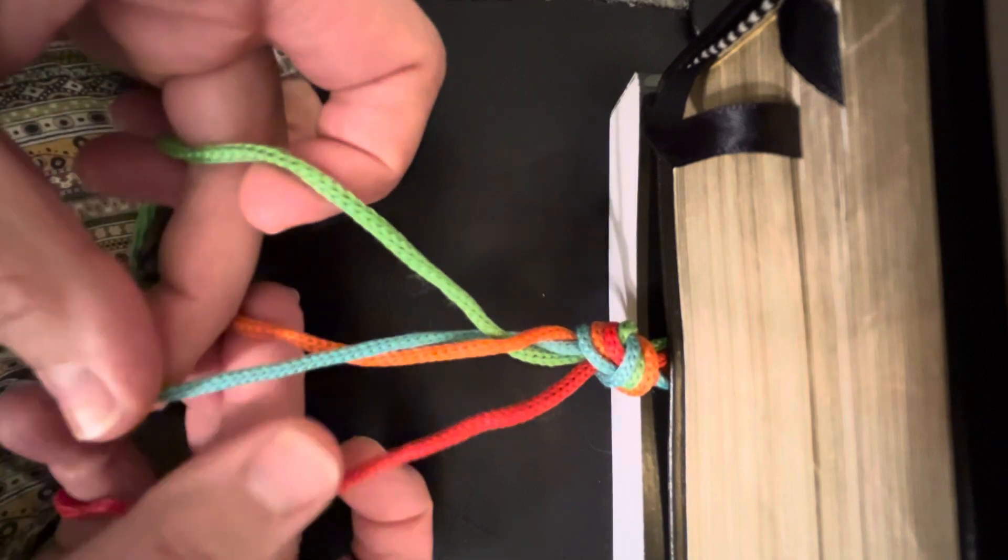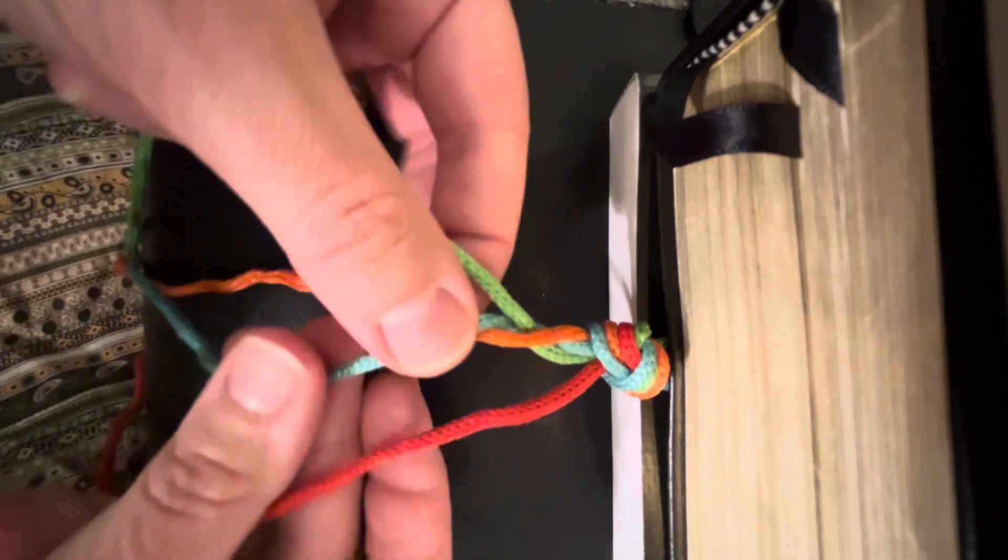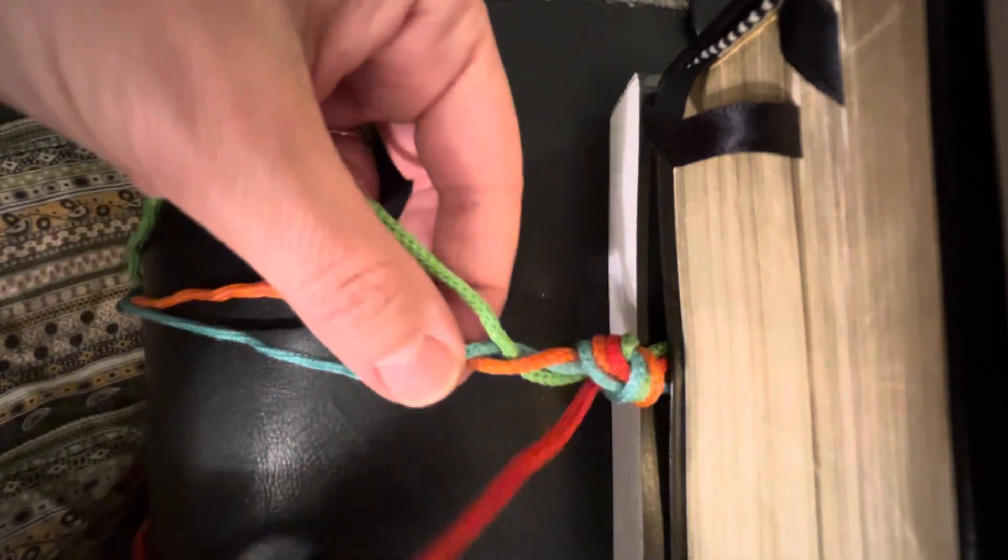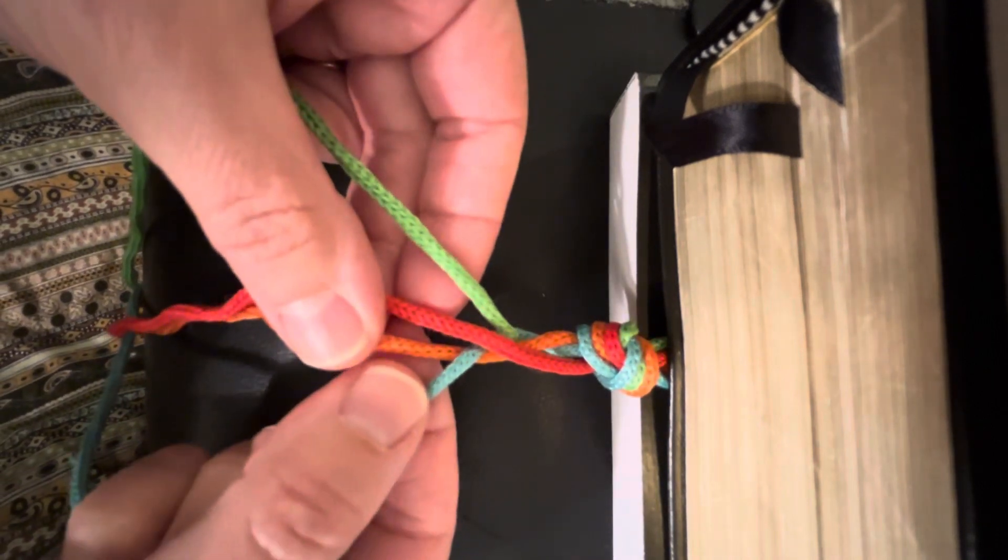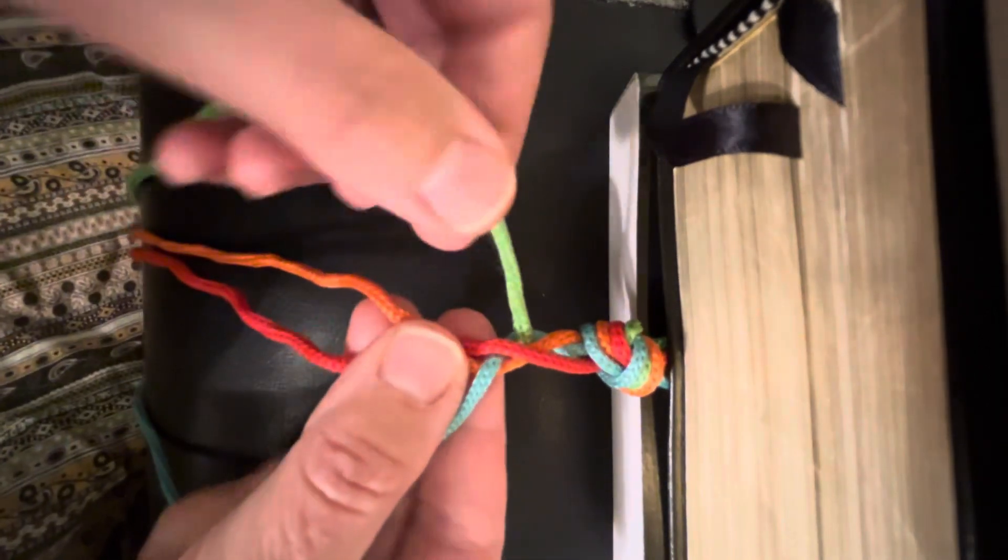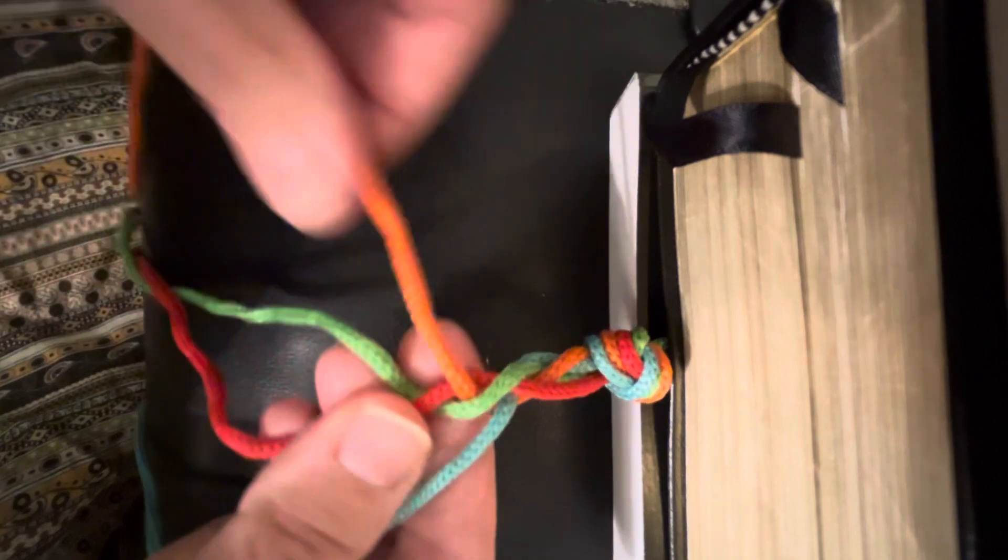Okay, so now you have orange and blue in the middle. Now you're going to do the red, cross over the middle two, and then the one that's closest to that one twists over it. Now we're going to do green, bring it over those two, twist over.